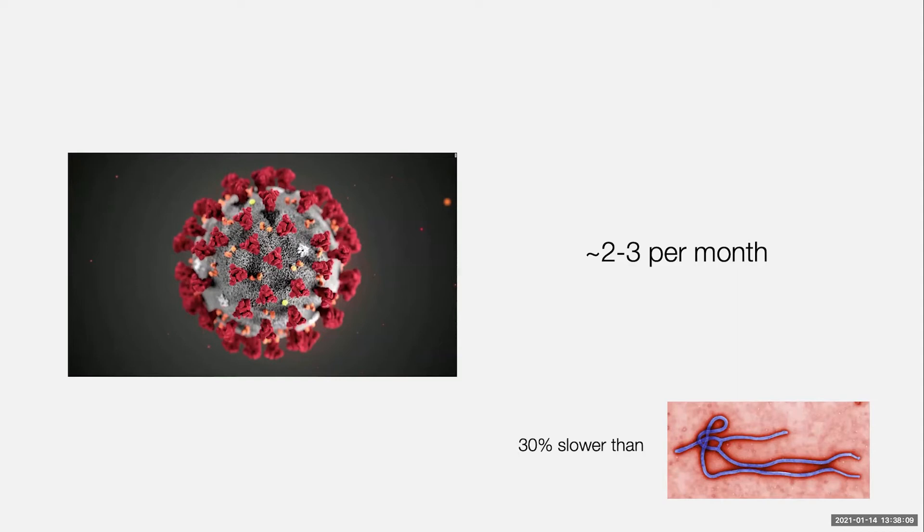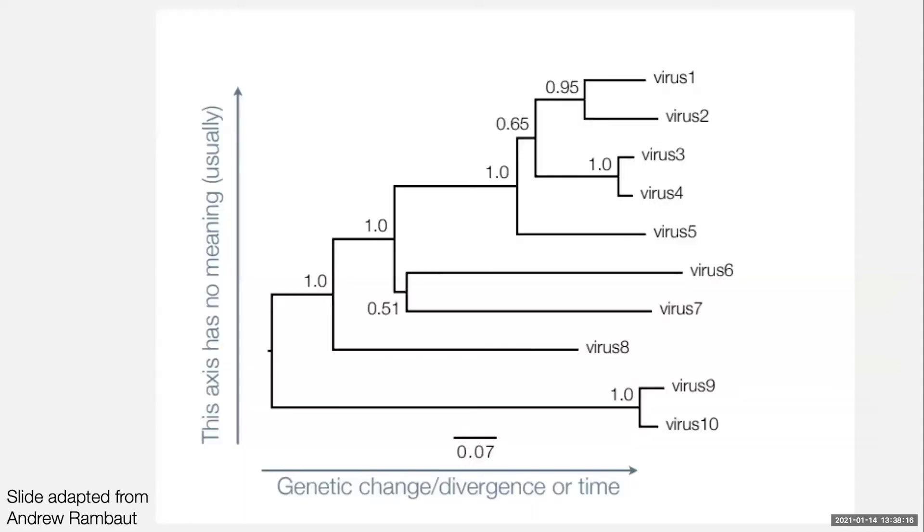So we want to compare mutations. Broadly speaking, we want to compare mutations found in one patient to mutations found in another. And that's where genome sequences and phylogenetics come in. So this is a schematic of a phylogeny. And what does this actually mean for virus sequencing?